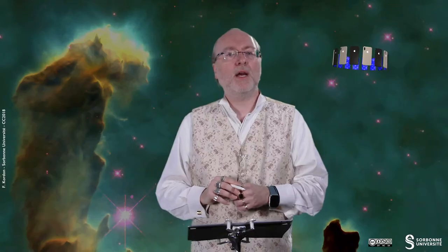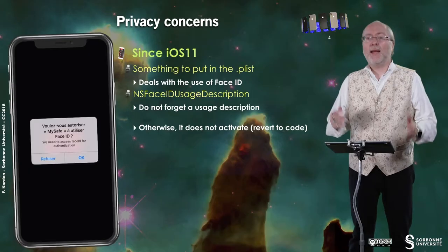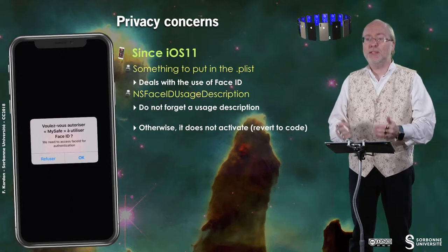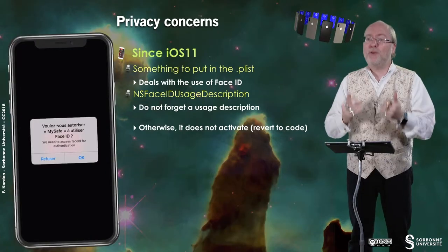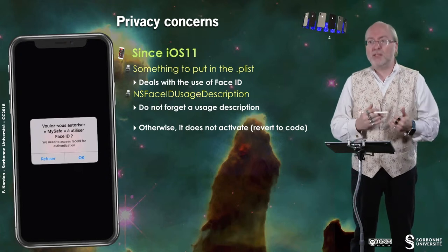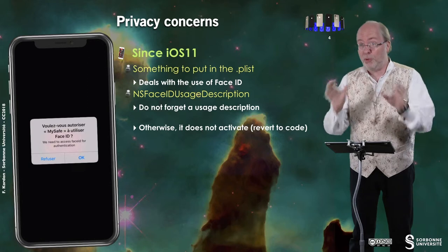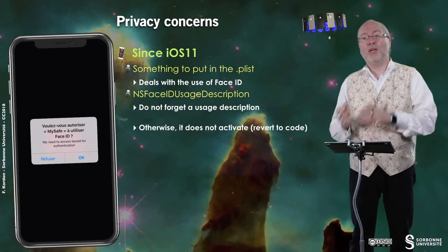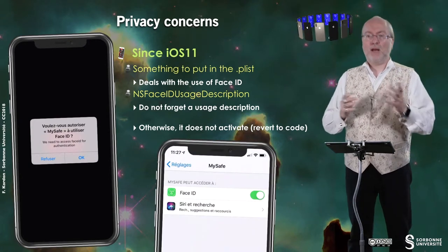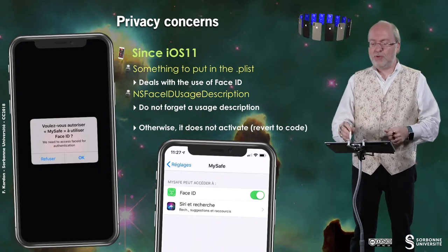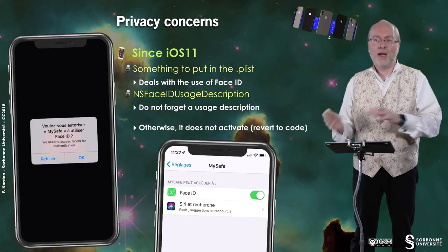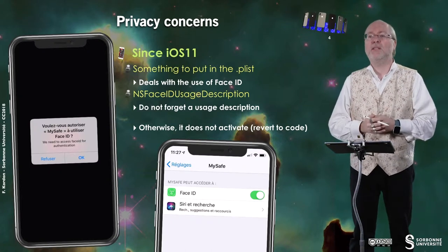There are some privacy concerns raised with iOS 11. If you are using Face ID and have set the relevant key in the Info.plist, the first time your application requests authentication, a permission dialog appears. The user can refuse, which falls back to the code if possible, or accept, which proceeds to Face ID. Afterwards, the user can activate or deactivate Face ID usage in the application's preferences, since that key makes your app appear there.